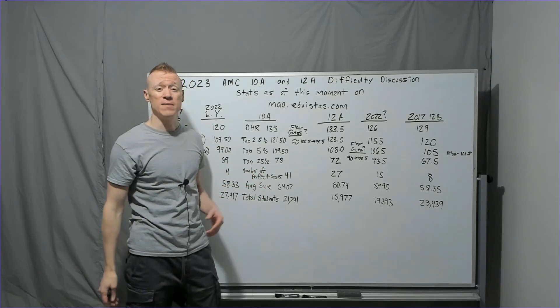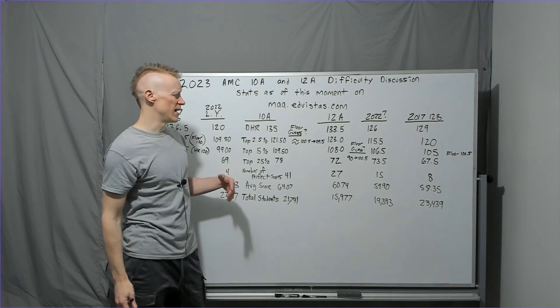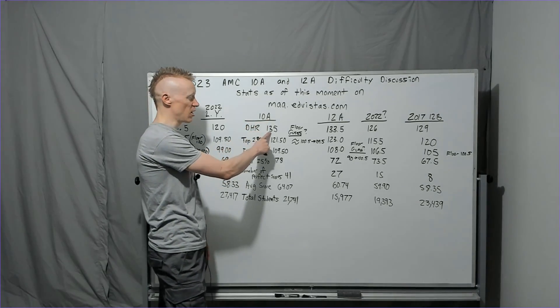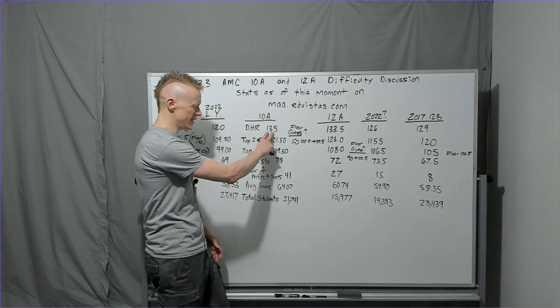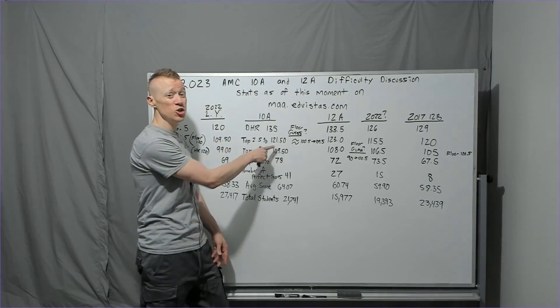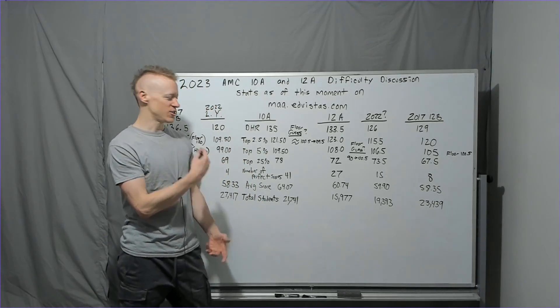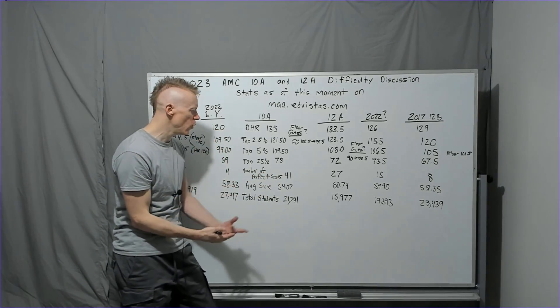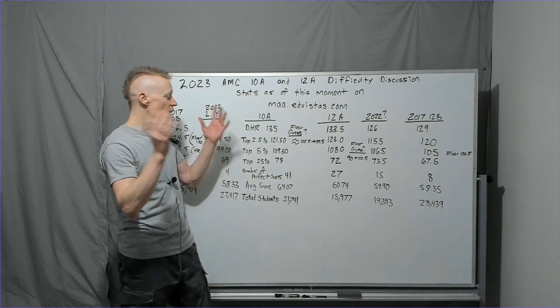If you go to maa.edvistas.com you're going to see the current stats because they get uploaded in real time. Currently at the time of this filming, which is 4 AM Pacific time on Thursday the 9th, the DHR is 135. Students who are analyzing this and getting anxious - look, last year it was only 120. Oh my gosh, 2.5 percent, the scores are so inflated. You go down here, the perfect scores last year there were only four, we're already up to 41 and they haven't even recorded everything yet. Oh my gosh.